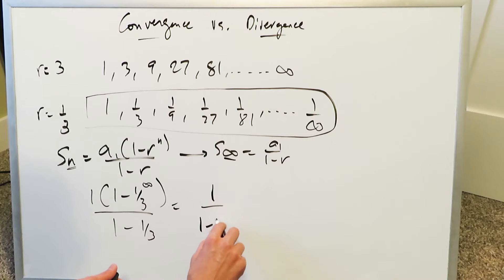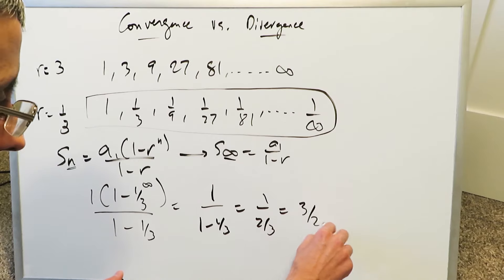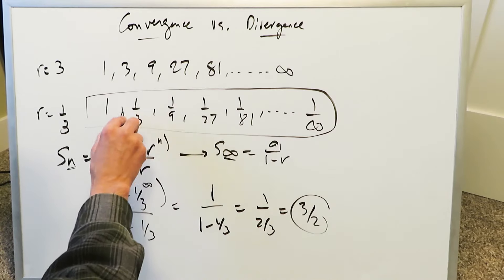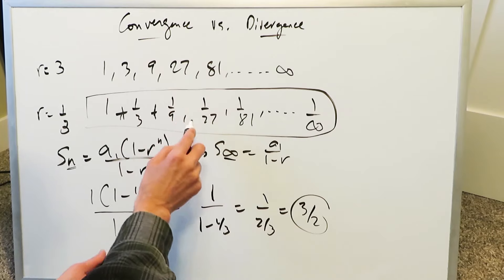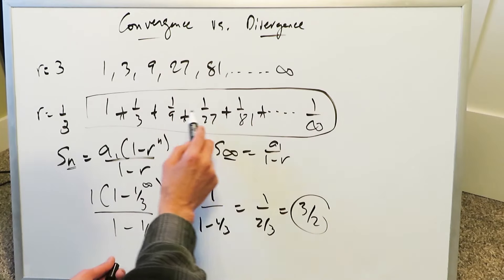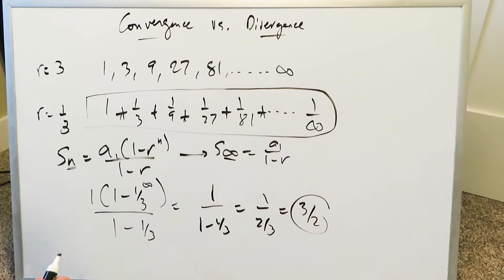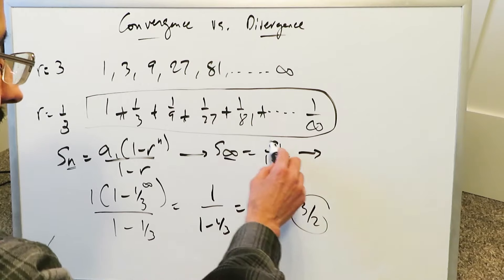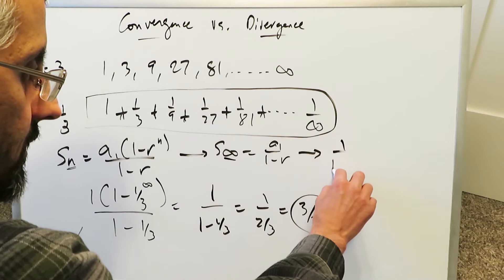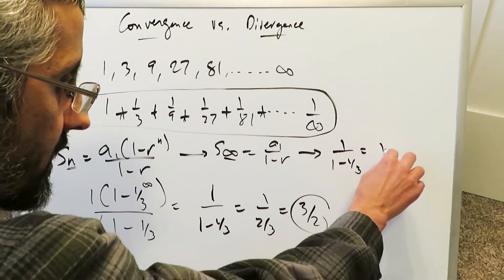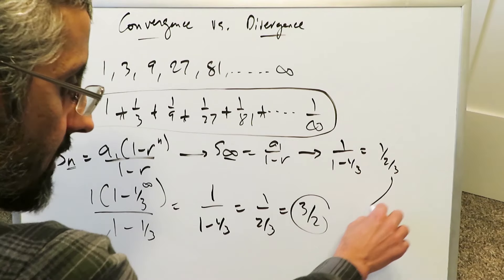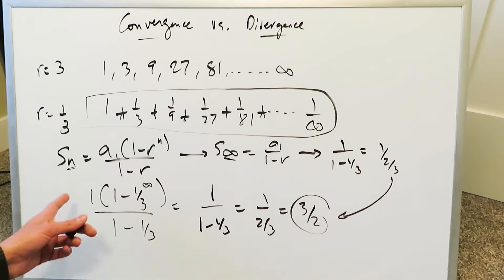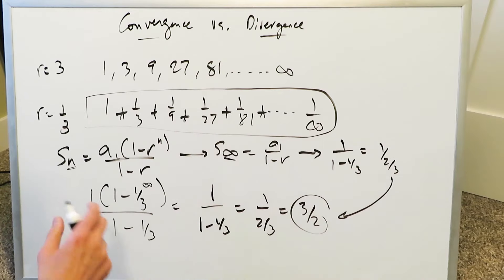So you have 1 over (1 minus 1/3), which gives you 1 over (2/3). When you flip that, you get 3/2. The sum of this sequence — 1 plus 1/3 plus 1/9 plus ... — now viewed as a series, with all these numbers sequentially adding to infinity, is 3/2. Not a very large number — it's 1.5. Running through the shortcut formula, first term is 1, divided by (1 minus 1/3) = 2/3, which gives exactly 3/2.